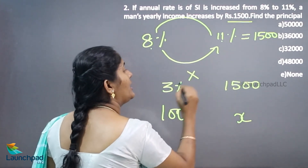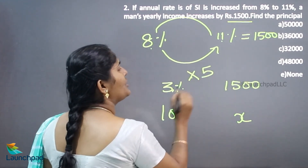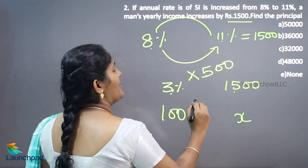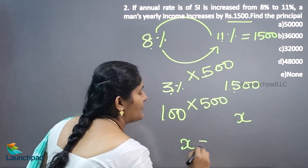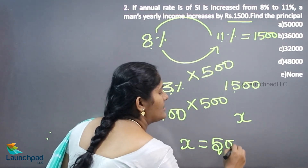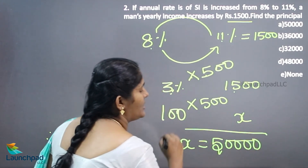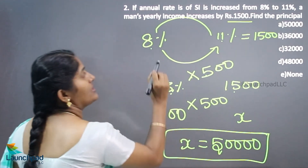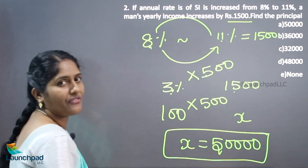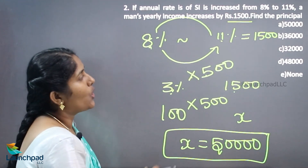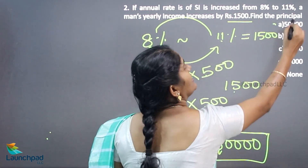So 3 percent equals 1500, meaning 1 percent equals 500. Therefore 100 percent equals 500 times 100, giving 50,000. Hence the principal amount is 50,000 rupees. Option A is correct. This is an example of how we can calculate the principal amount. Thank you for watching.